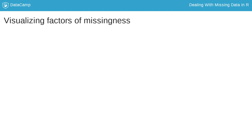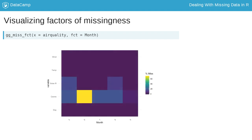To explore how missingness in each variable changes across a factor, use gg-miss-fct. This displays a heatmap visualization showing the factors on the x-axis and each other variable on the y-axis, with the amount of missingness colored from dark purple through to yellow. gg-miss-fct does not support faceting.